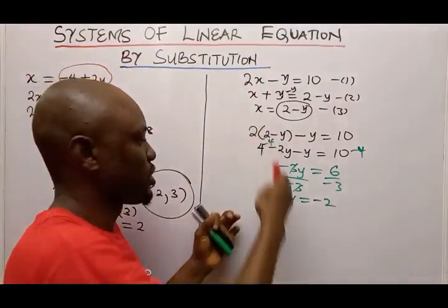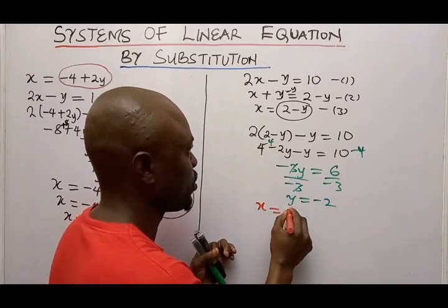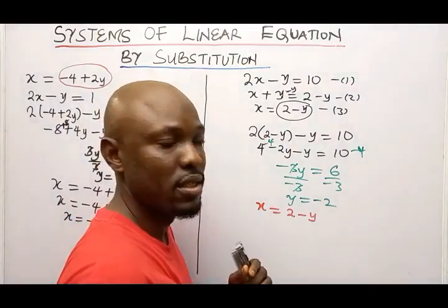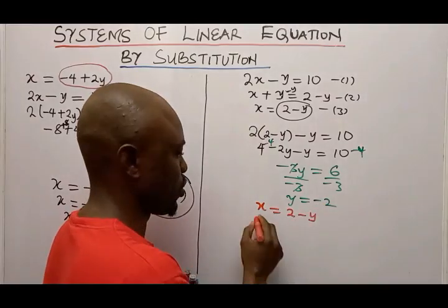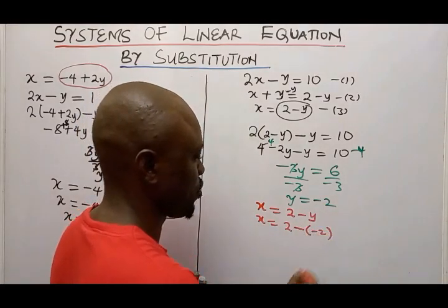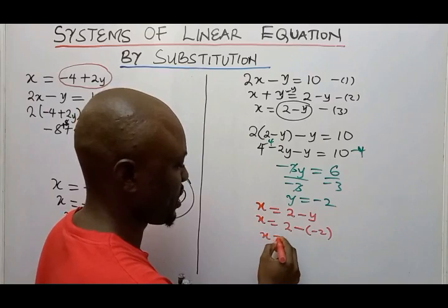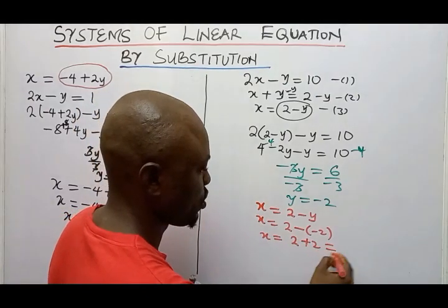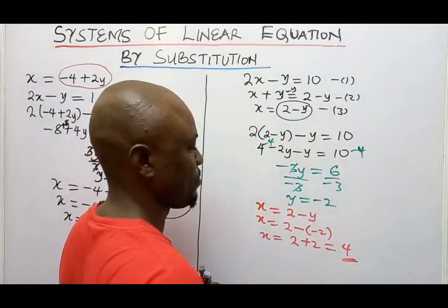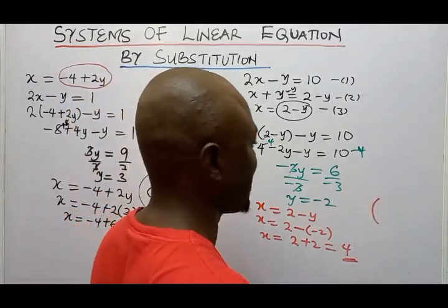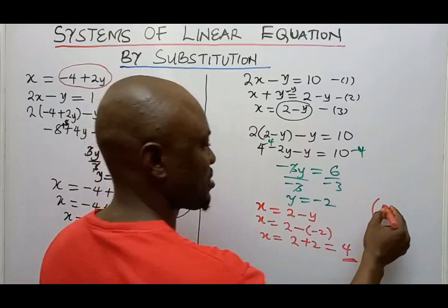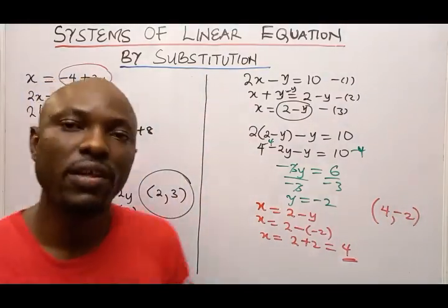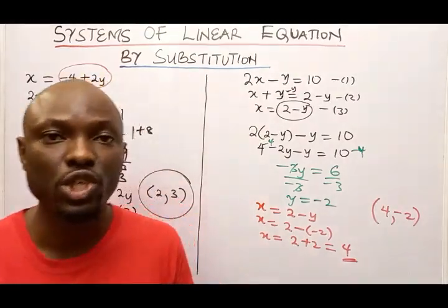From equation 3, I have X equals 2 minus Y. Wherever I see Y, I plug in minus 2. So X equals 2 minus minus 2. Minus minus is plus, so X equals 2 plus 2, which gives me 4. Finally, my X value is 4 when Y is negative 2.